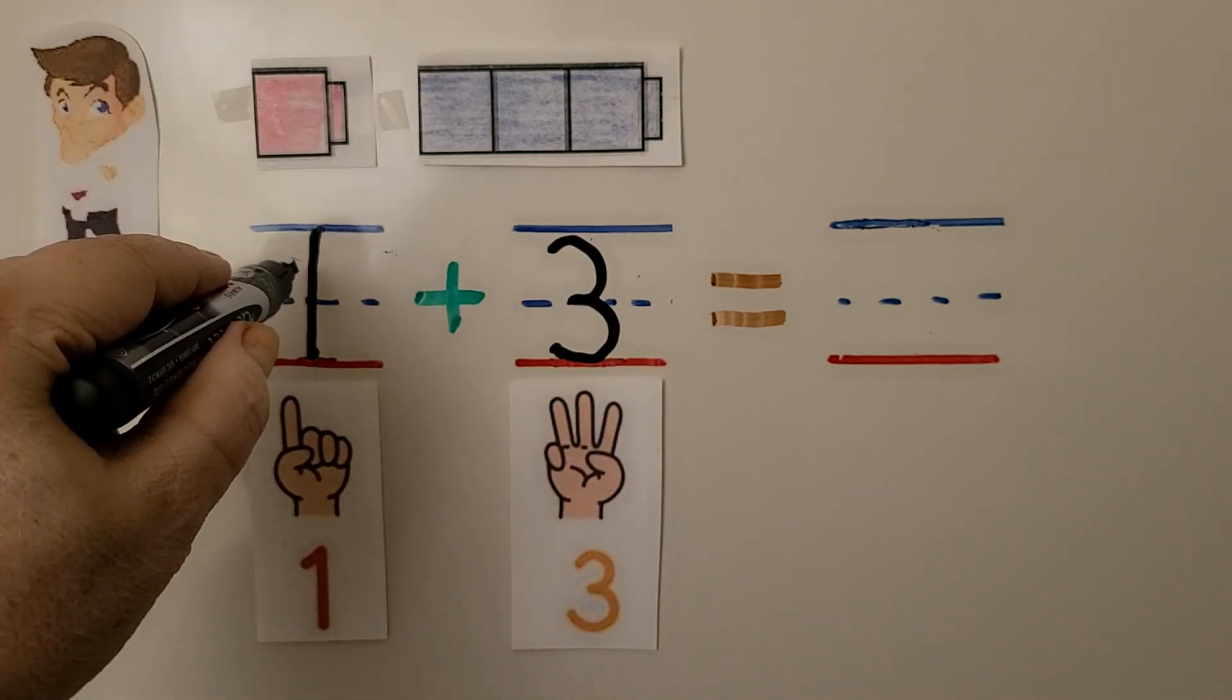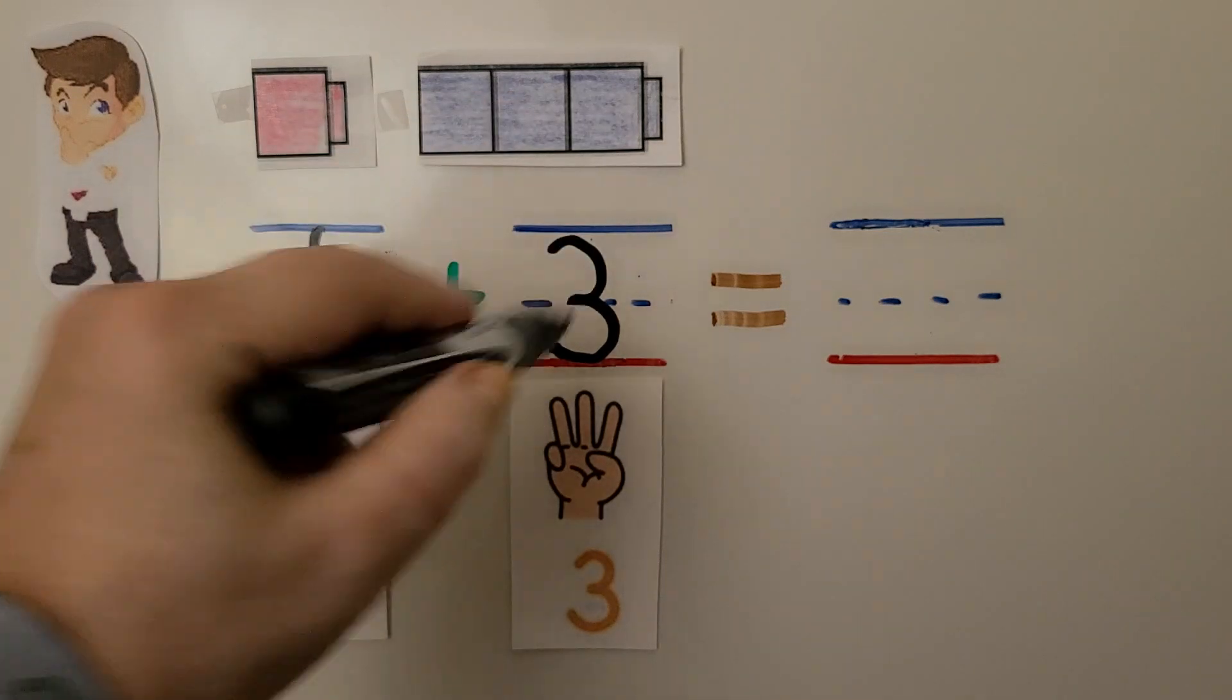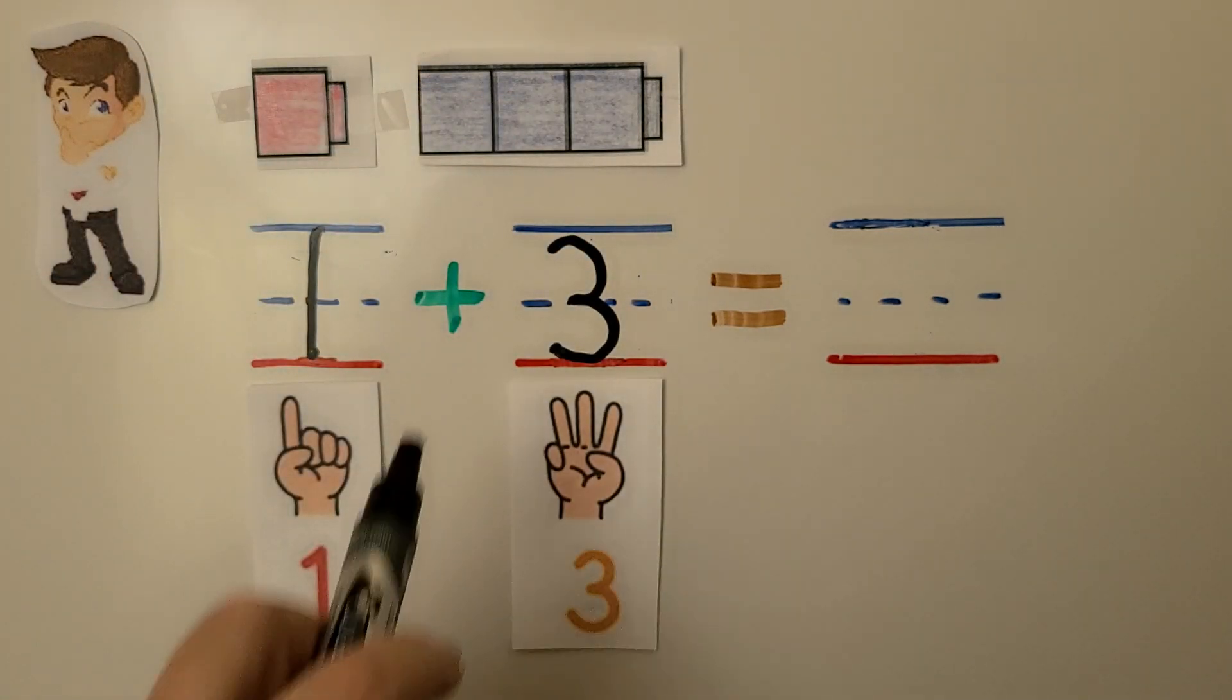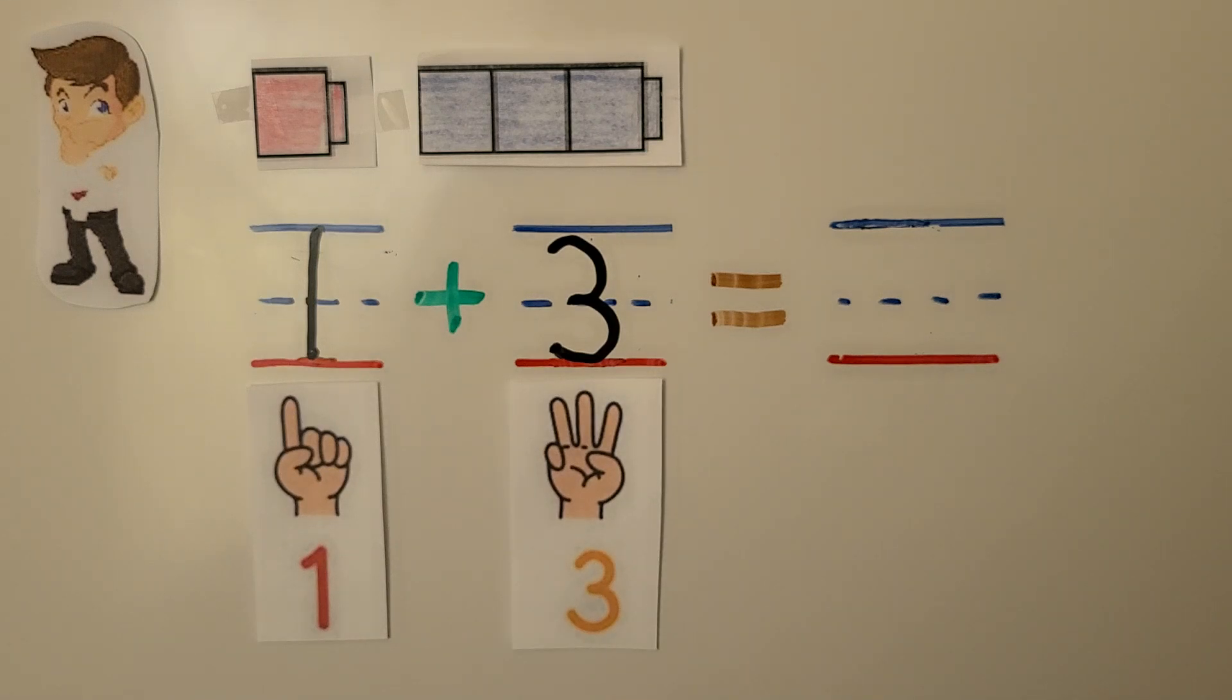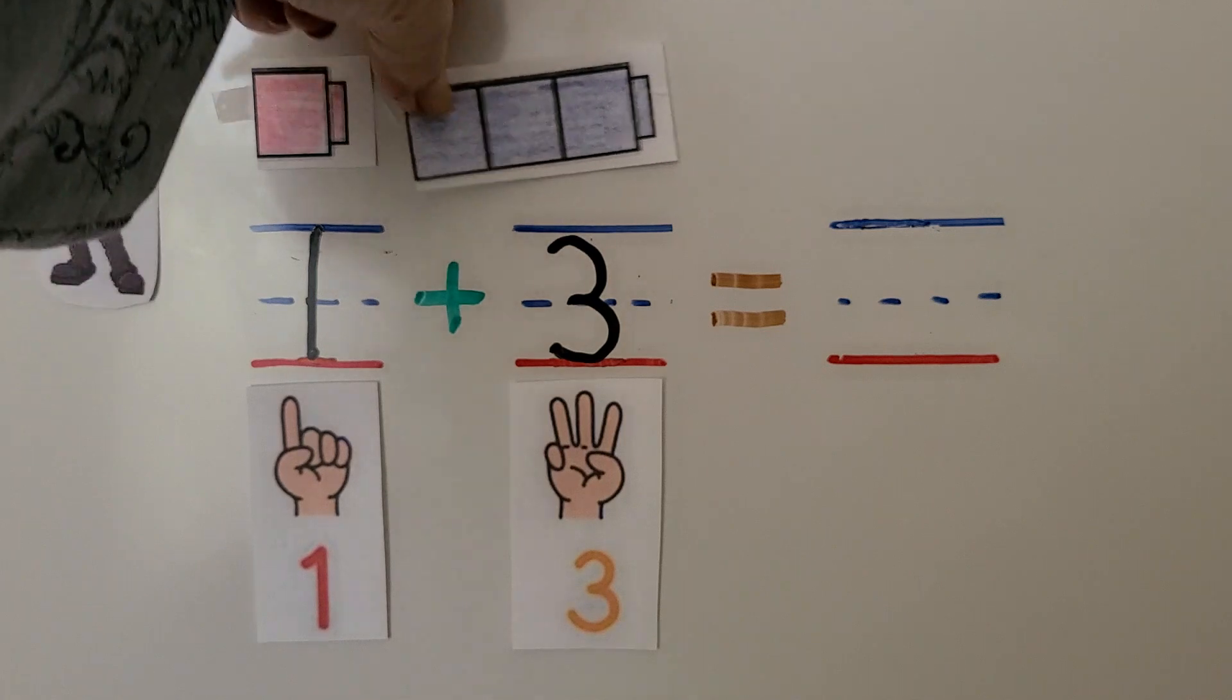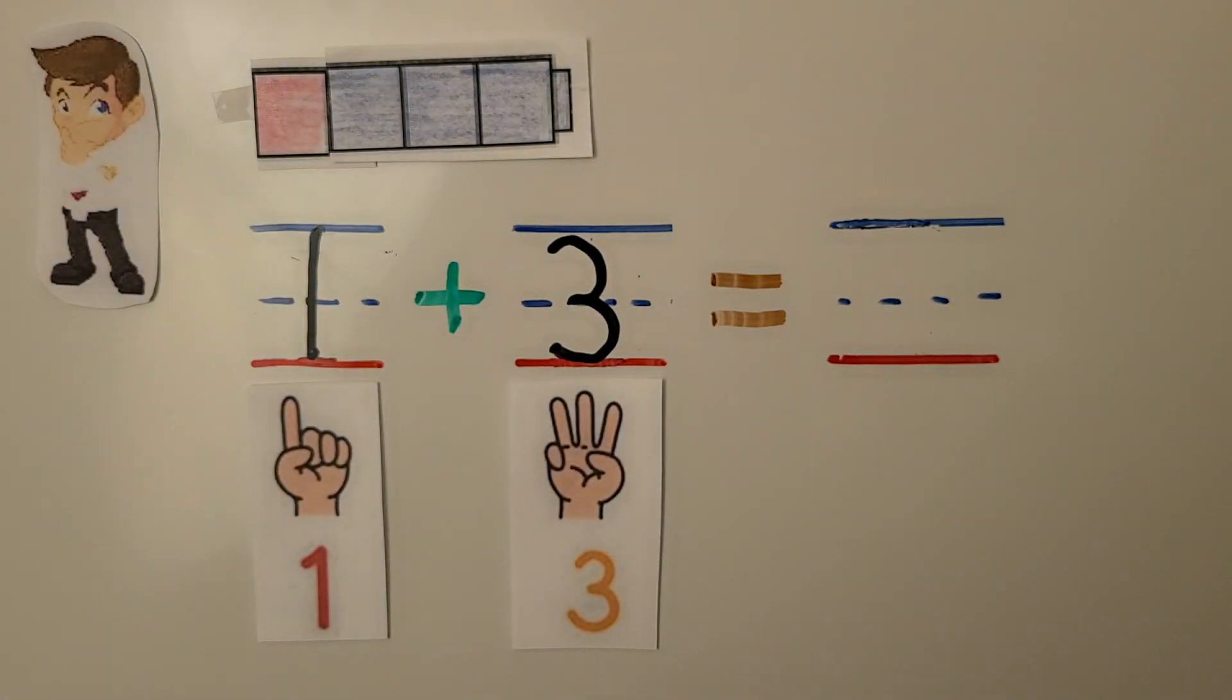We put the number for this color here and the number for this color here. And we can add by putting one and three together to make a cube train. We can put the one red one and the three blue ones together to make a cube train. So how many cubes are in the cube train?